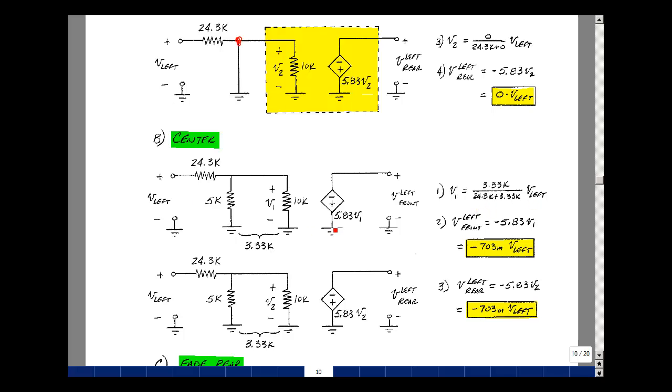Multiply that by a gain of minus 5.83. And now when you multiply this times a minus 5.83, you get minus 0.703 times that left input. The same is true for the bottom circuit because we've got the same equivalent circuit. We're looking at here now the node voltage V2.